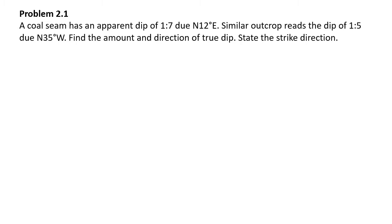So the first problem, problem number 1, says that a coal seam — a seam is nothing but a bed — has an apparent dip of 1 is to 7 due north 12 degrees east. A similar outcrop reads at 1 is to 5, north 35 degrees west. Find the amount and direction of true dip and state the strike direction.